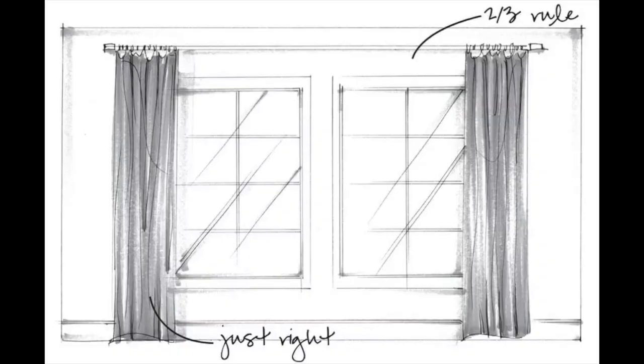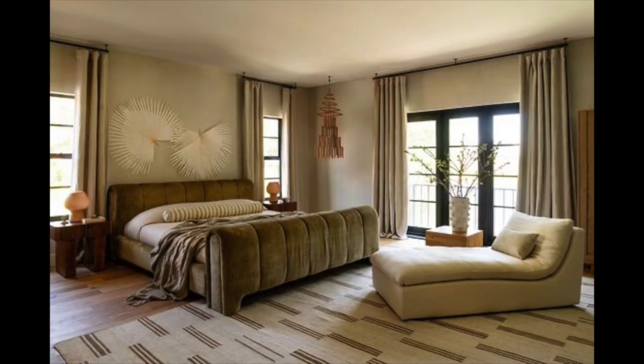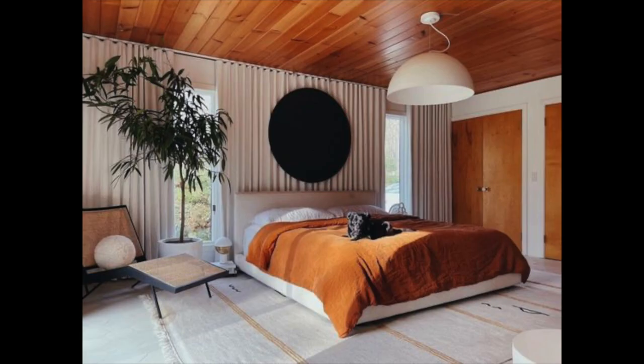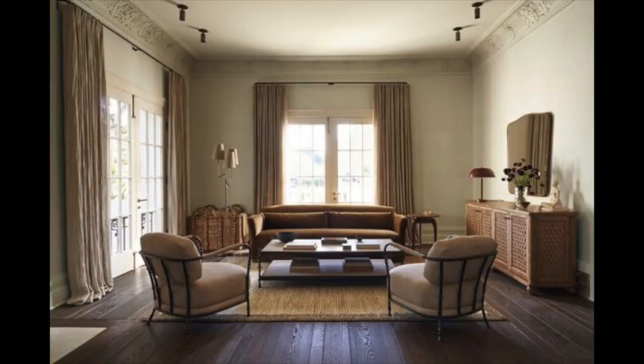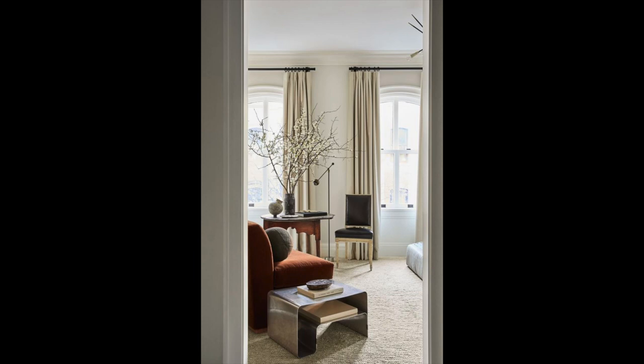A general design rule to know how high to hang your curtain rods is either halfway up or two-thirds of the way up between your window frame and your ceiling height. I personally like to hang curtains as high as possible — this gives the overall design a very grand, elevated look. If you happen to have crown molding in your space, then I would hang your curtain rod three-fourths of an inch below your crown molding.